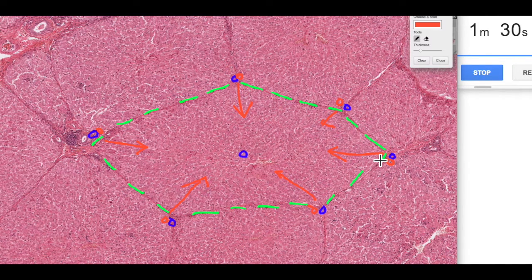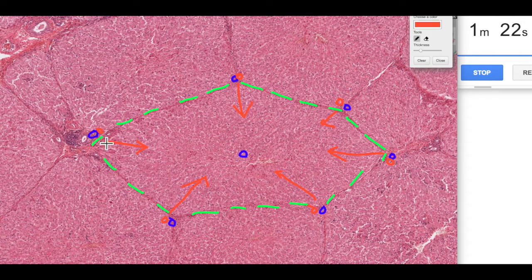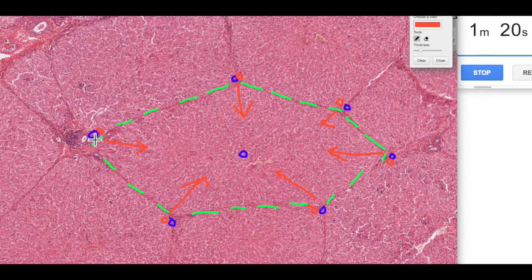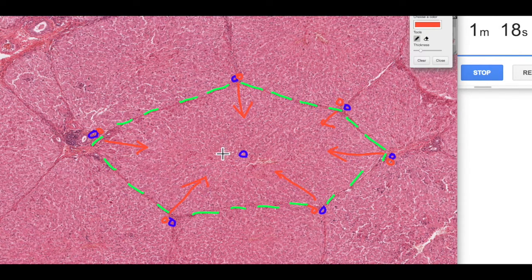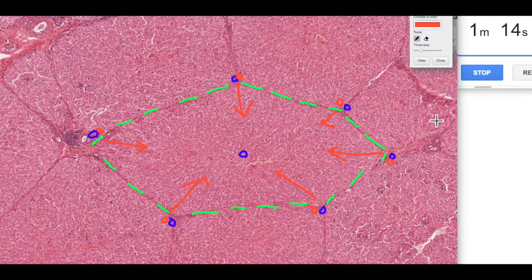So this is our classic lobule structure, the typical histologist way of thinking about the liver. The idea of the hexagon with the portal regions, with our dual blood supply, with the dual blood actually coalescing and then draining into this central vein. This is the classic liver lobule structure, and I hope you found that useful.